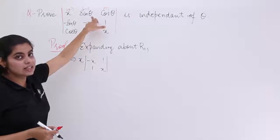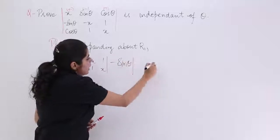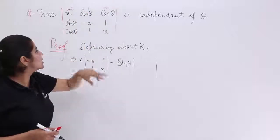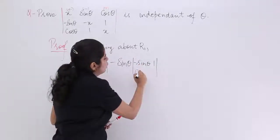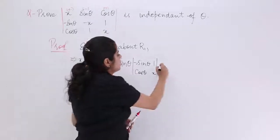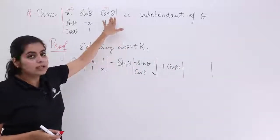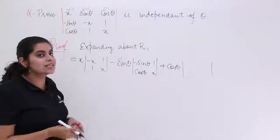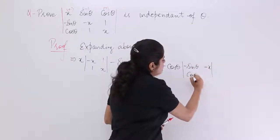Next element is sin theta, preceded by minus. So it is minus sin theta multiplied by the sub-determinant obtained by eliminating the second column and first row, which gives: minus sin theta, 1, cos theta, x. Then plus cos theta multiplied by the sub-determinant from eliminating the third column and first row, which is: minus sin theta, minus x, cos theta, 1.